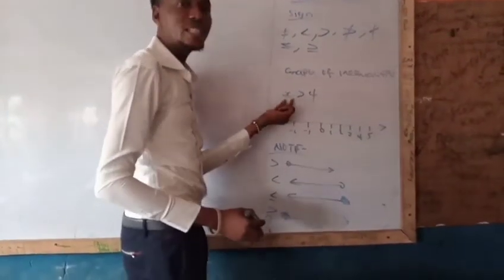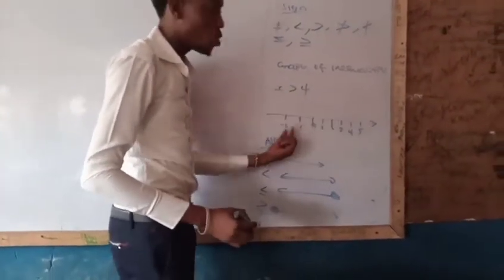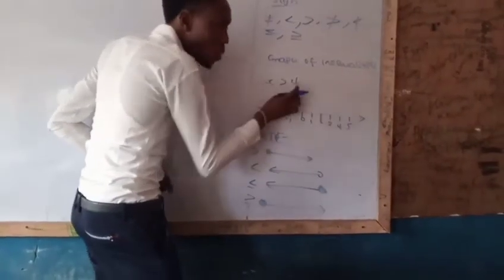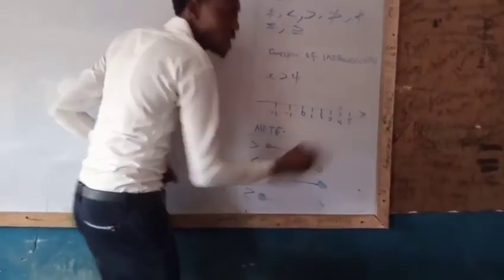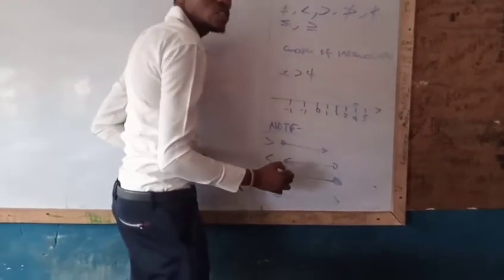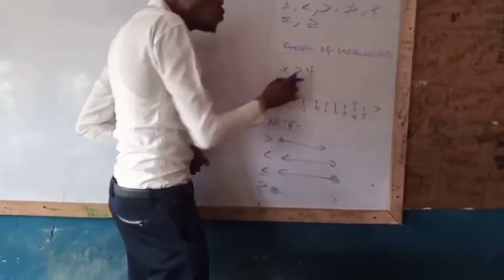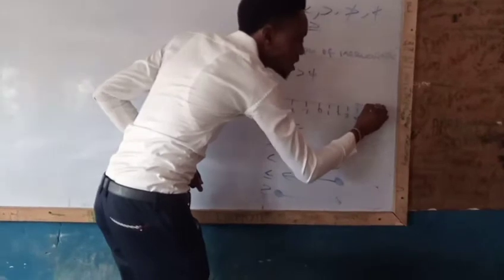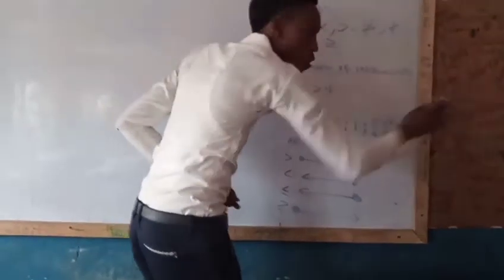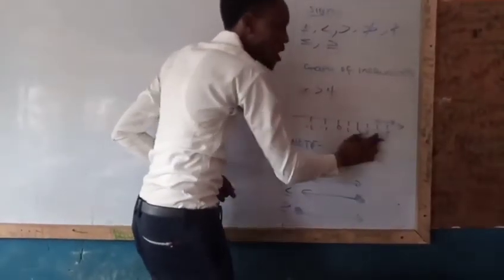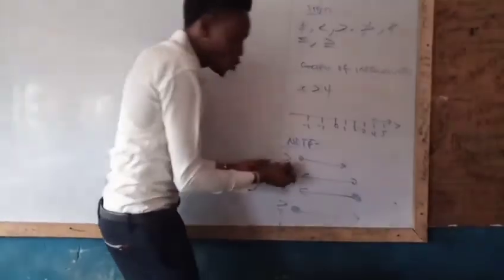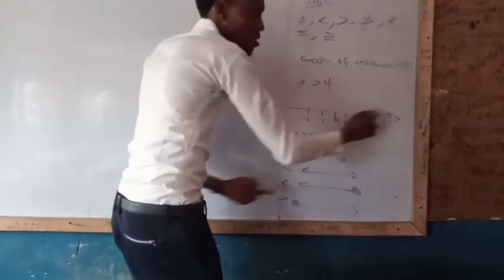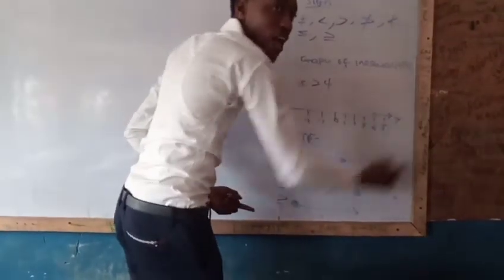For example, to show x greater than 4 on the graph: where x equals 4, values greater than 4 — like 5, 6, and so on — satisfy x > 4. Since we have 'greater than,' the arrow points to the right-hand side.